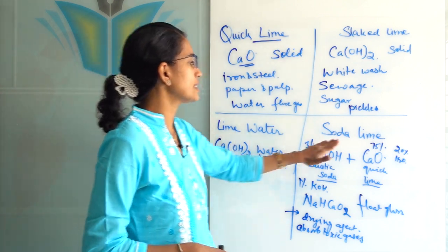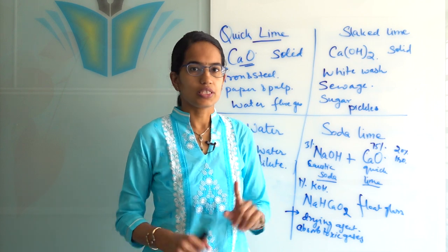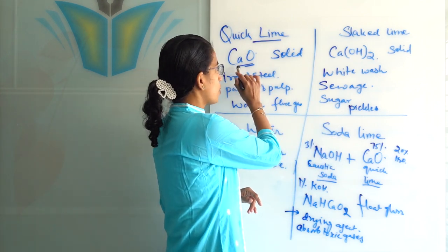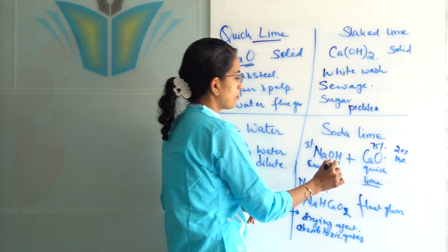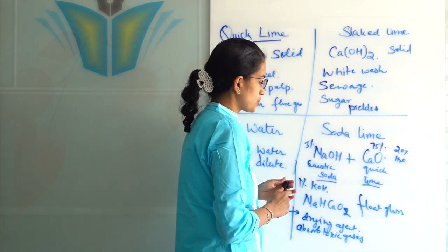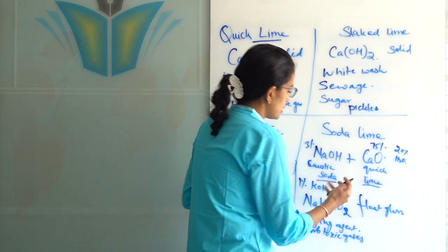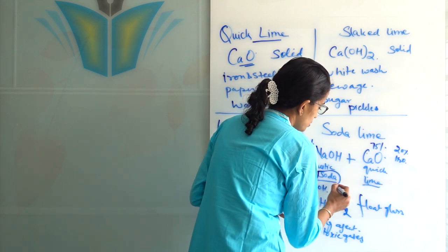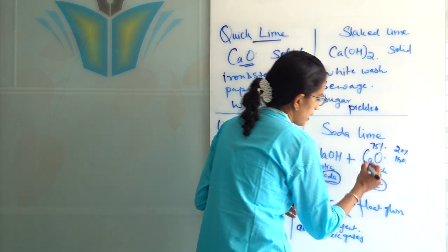The next one is soda lime. Soda lime is interesting. This is calcium oxide which is quick lime plus sodium hydroxide which is caustic soda. So how do we remember this? Caustic soda and quick lime. So I take the word soda here and I take the word lime here. This makes it soda lime.